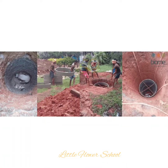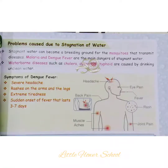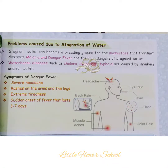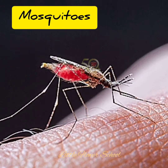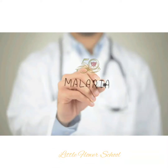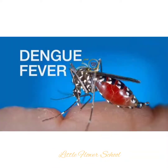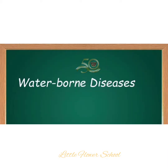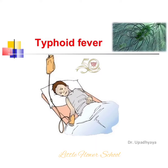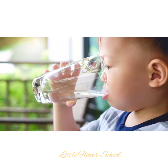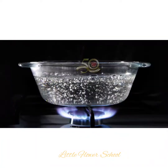The next topic is the problem caused due to stagnation of water. Stagnant water can become a breeding ground for mosquitoes. Mosquitoes transmit many diseases to us. Malaria and dengue are the main dangerous diseases. Some waterborne diseases such as cholera, dysentery, and typhoid are also caused by drinking unclean water. Children, keep in mind — you should always boil the water before drinking.